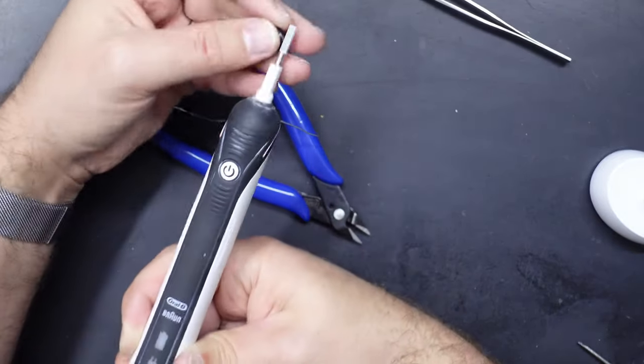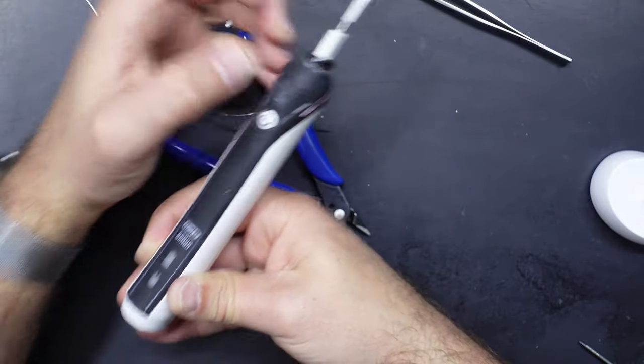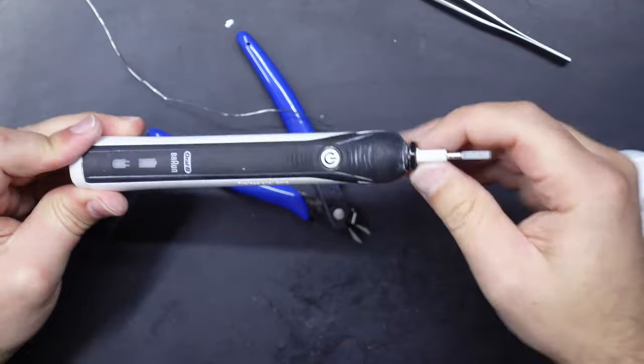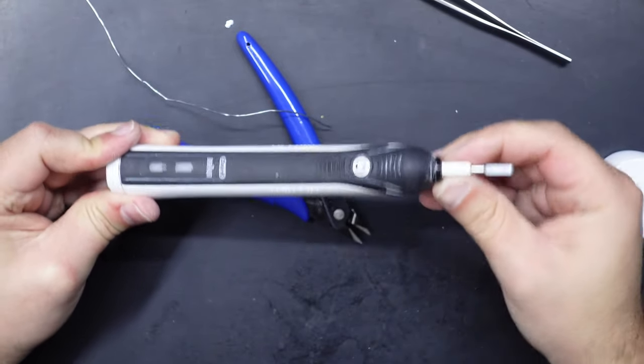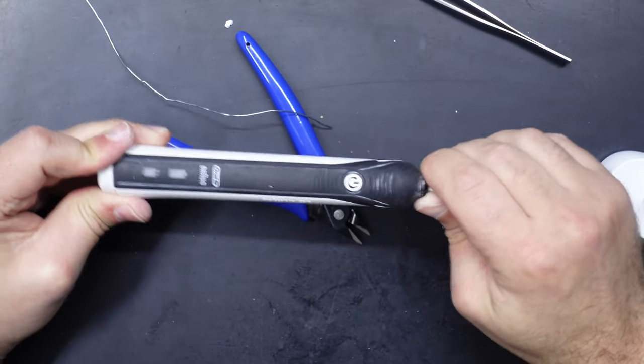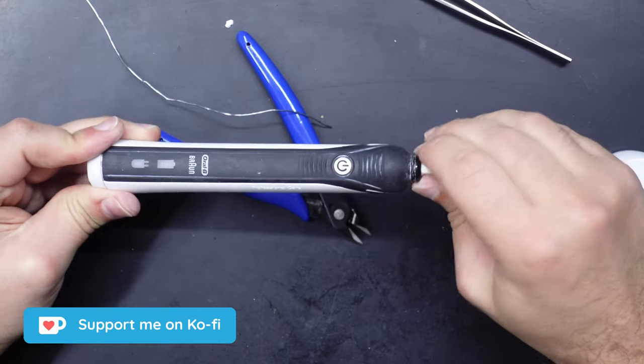assuming that you've already got a soldering iron and solder and stuff. If not, consider getting one. They are very handy items to have and a must-have when you're doing repairs. So that's about it for me, I'm going to put this back together. Thank you for watching this Wikipedia and consider buying me a coffee if this has helped you out.